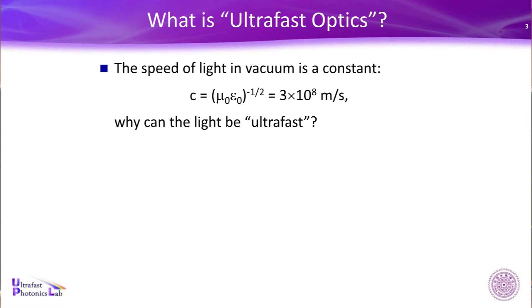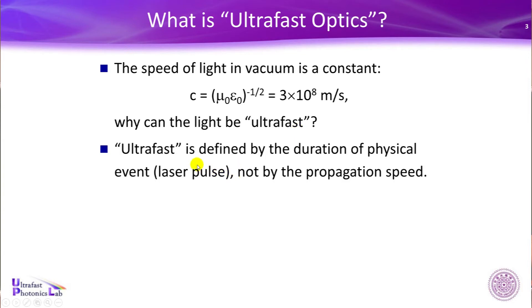So, what is ultrafast optics? It's an interesting question, because the speed of light in vacuum is a constant. C equals square root of μ₀ times ε₀, as you know. And you know the constant is about 3 times 10⁸ meters per second. Everyone knows this formula. If the speed is a constant, why can the light be ultrafast? It's a very interesting question, right?